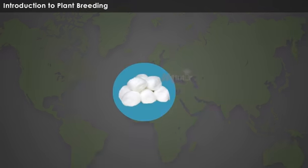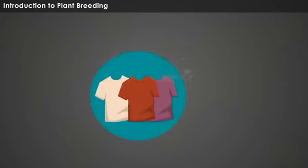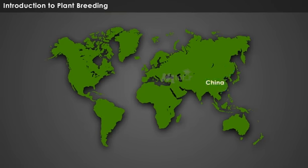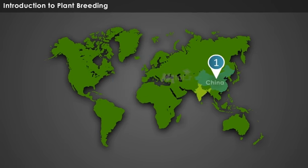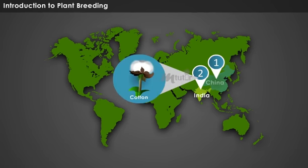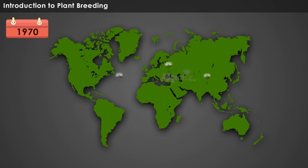All over the world, cotton is one of the most commonly used fibers in the textile industry. China ranks first among the cotton producing countries in the world. India holds the second place in cotton production after China. The surprising fact is that until the 1970s, India used to import large quantities of cotton from other nations.